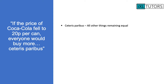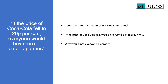So for example, if income stayed exactly the same, the population size stayed exactly the same, there was no extra advertising and no other offers — if the price of Coca-Cola fell to 20 pence per can, would everyone buy more? Jot down what you think, and if you think some people might not buy more, why would those people not buy more? And how could Coca-Cola persuade you to buy more of their drink?